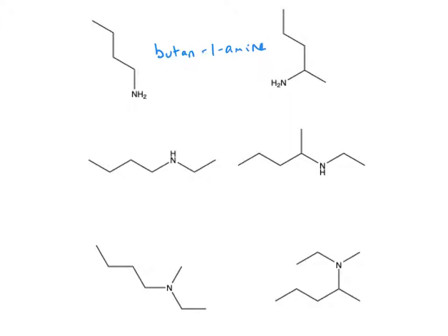In our second example, we have a carbon chain of five, and so our root is pentan-. We can see that our amine group is attached to the second carbon, giving us a final name of pentan-2-amine.